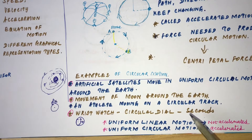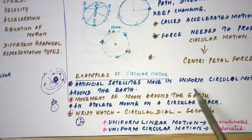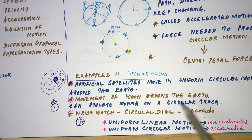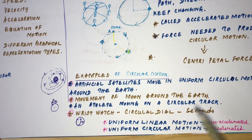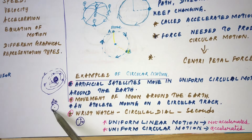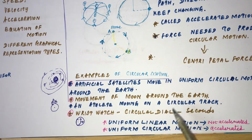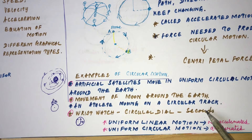Other examples of circular motion include artificial satellites moving in uniform circular motion around the Earth, the movement of the Moon around the Earth, an athlete moving in a circular track, and the second hand on a wristwatch dial.